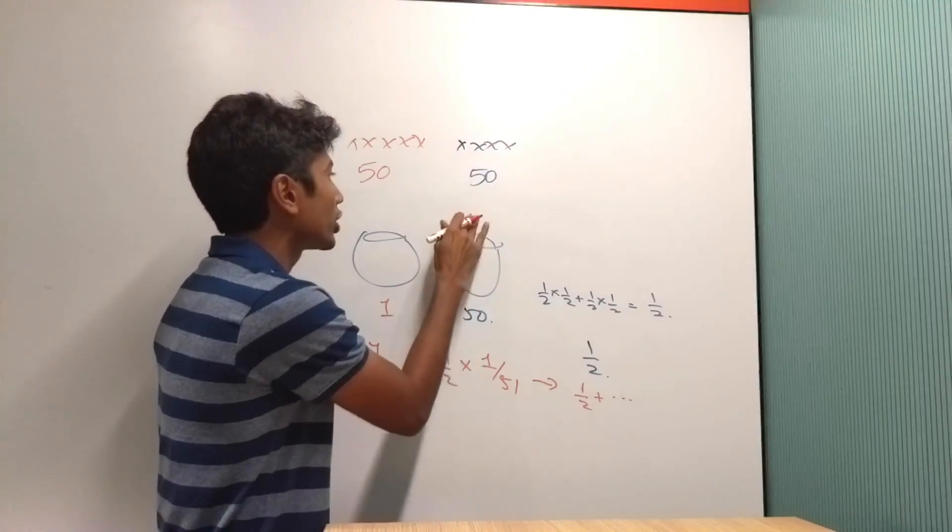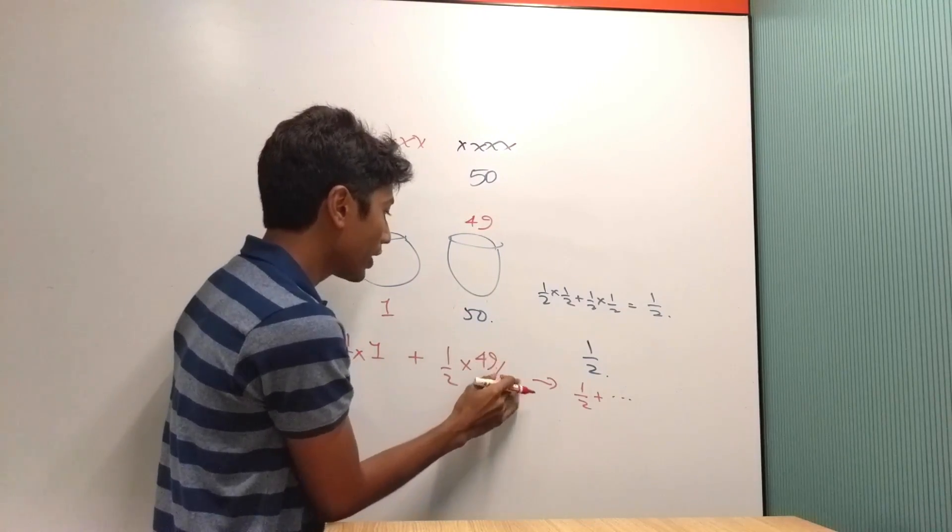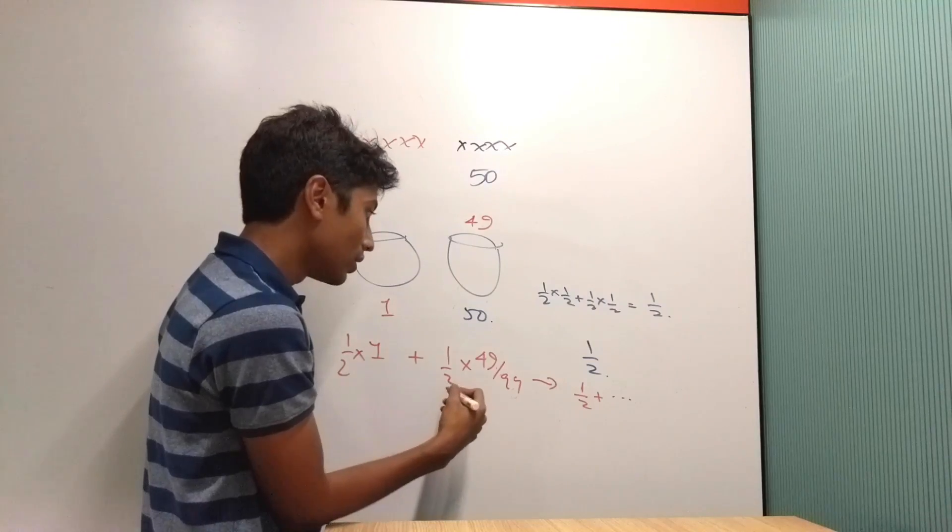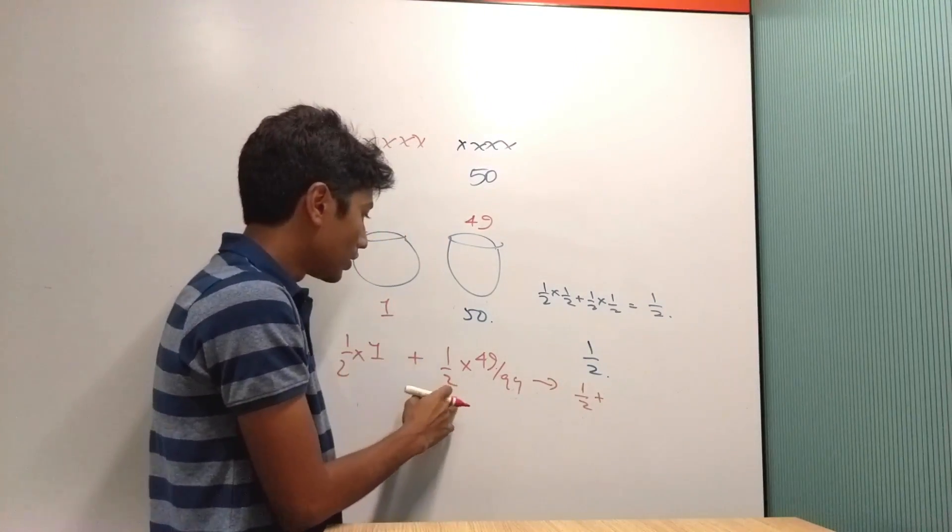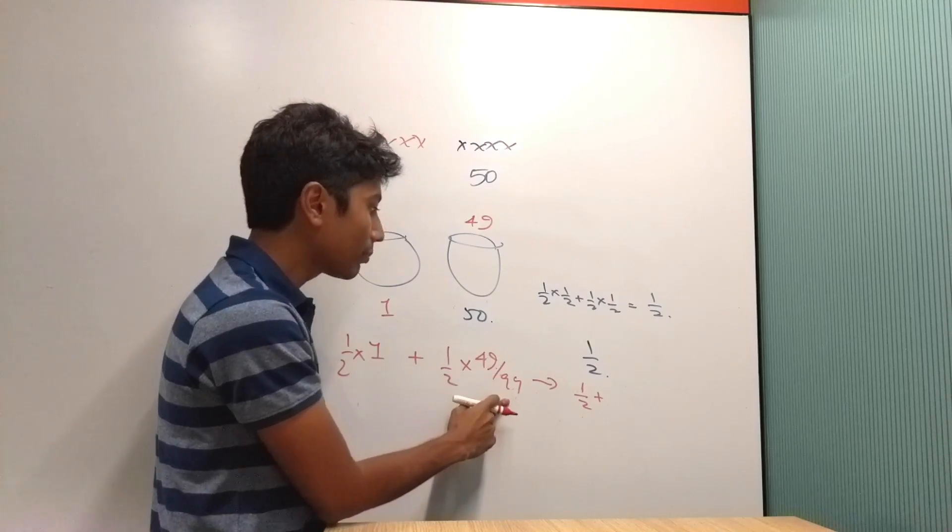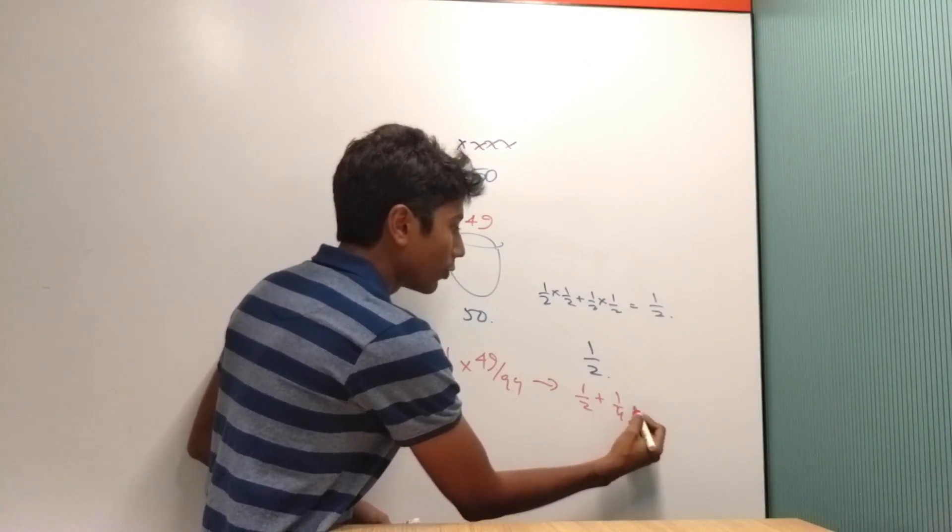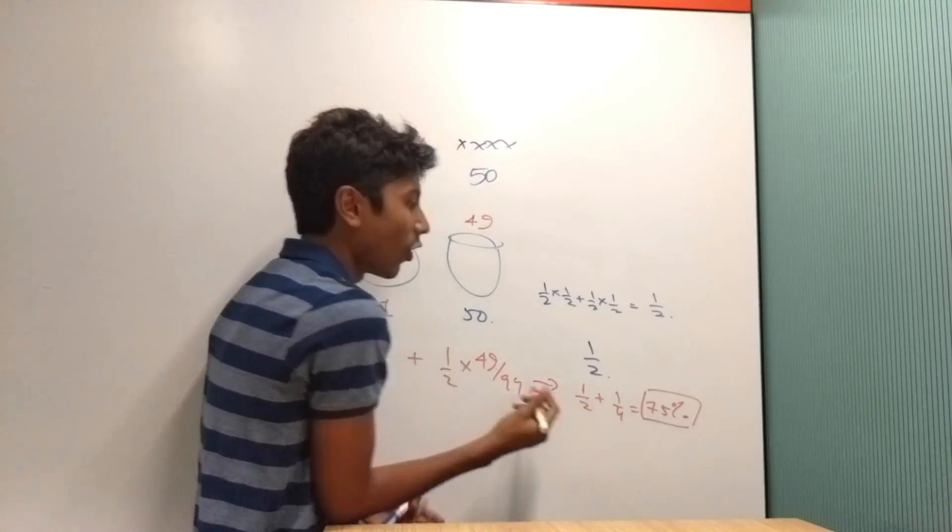And I push in 49 of these red chits over here to get 49 as a numerator and 49 plus 50, which is 99 as a denominator. I'm getting half over here and I'm getting a half into 49 by 99, which is around half. So this will be about 1 by 4, which is 75% chance of winning.